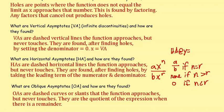What are horizontal asymptotes (H-A) and how are they found? H-A's are dashed horizontal lines that the function approaches but never touches. They are found after finding holes by taking the leading term of the numerator and denominator. We have three cases: if the degree n equals r, the H-A is y = A/B; if n is greater than r, there is no horizontal asymptote; if n is less than r, the H-A is y = 0.